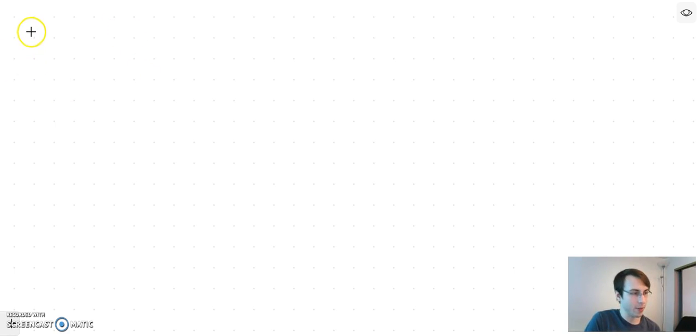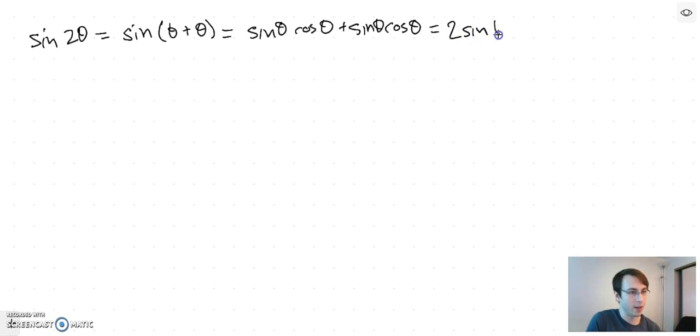So the double angle formulas first. If we want to find sine of 2θ, well that's really just an angle addition. That's just sine of θ plus θ, which we already know how to take care of. That's just sin θ cos θ plus sin θ cos θ, which is 2 sin θ cos θ at the end. Almost forgot that one.